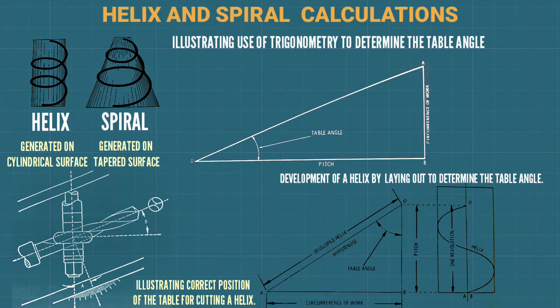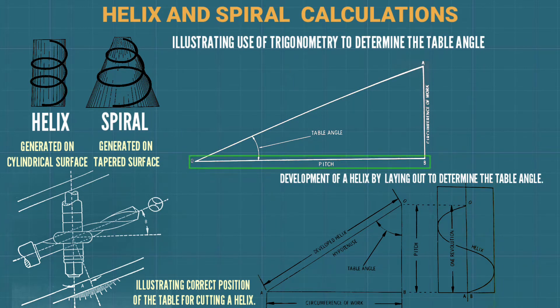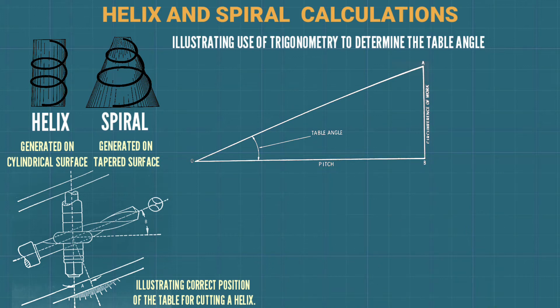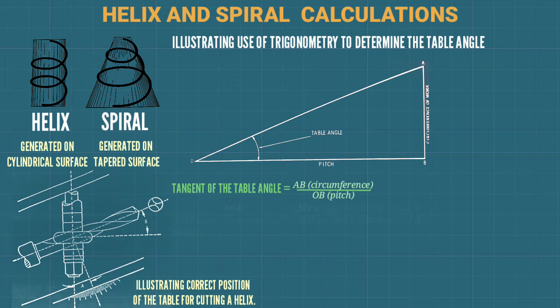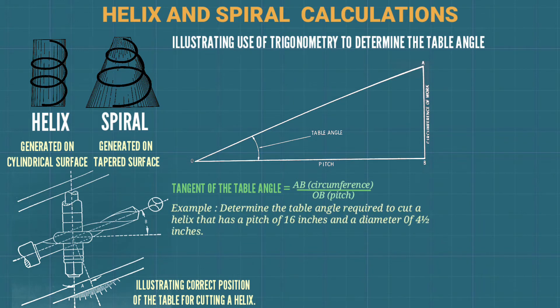Illustrating the use of trigonometry to determine the table angle. In the triangle EOV, we let side EV equal the circumference of the work and let side OV equal the pitch. Then the tangent of the table angle equals EV (circumference) divided by OV (pitch).